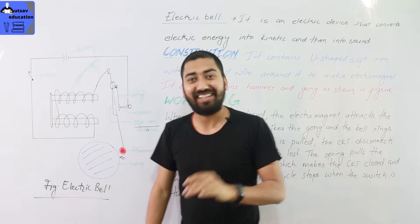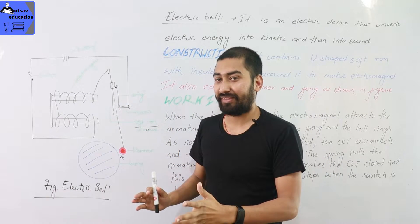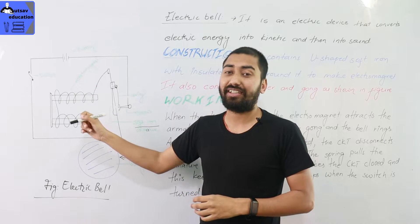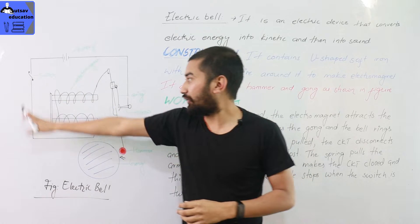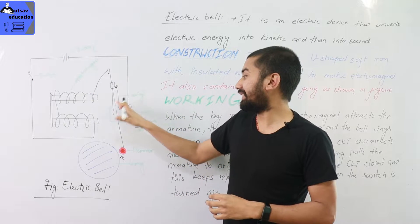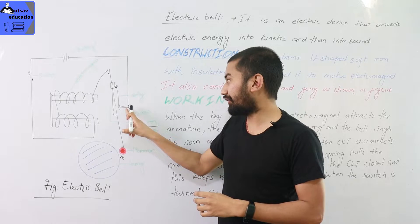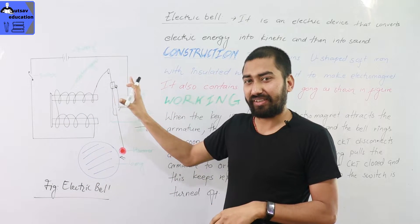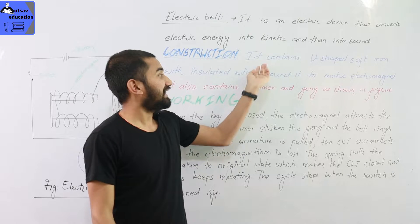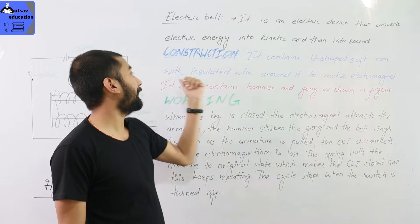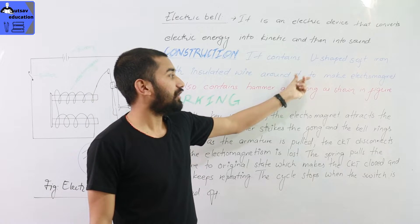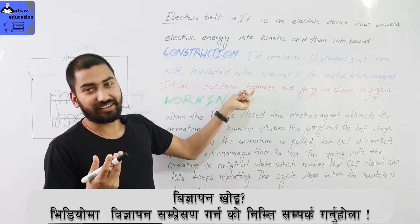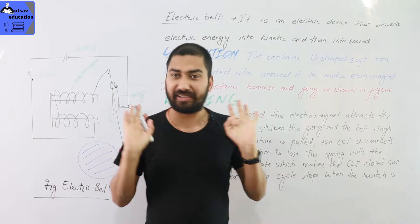It consists of a U-shaped soft iron core wounded by insulated wire with a switch, a battery power and this is a spring and soft iron armature, a screw, hammer and a gong as it is shown in the diagram. It consists of a U-shaped soft iron with insulated wire around it to make an electromagnet. It also contains a hammer and a gong as shown in the figure.